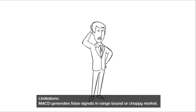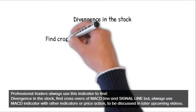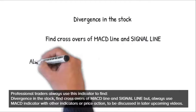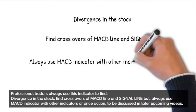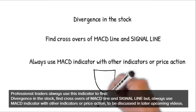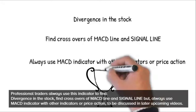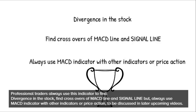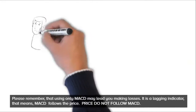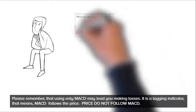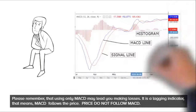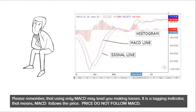Professional traders always use this indicator to find divergence in the stock and find crossovers of the MACD line and signal line. But always use the MACD indicator with other indicators or price action. Please remember that using only MACD may lead to making losses. It is a lagging indicator, meaning MACD follows the price — price does not follow MACD.